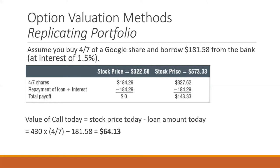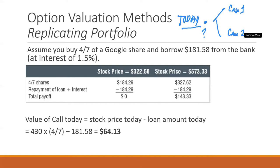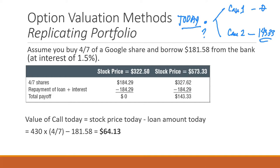Today, we don't know the value of the option. But we have two cases: under case one, cash flow of the option is zero; under case two, it is $143.33. What we are going to do now is form that replicating portfolio. You can do this by buying four-sevenths of a Google share now and borrowing $181.58 from the bank at an interest rate of 1.5%. With that information, we want to know the value of this portfolio six months from now.